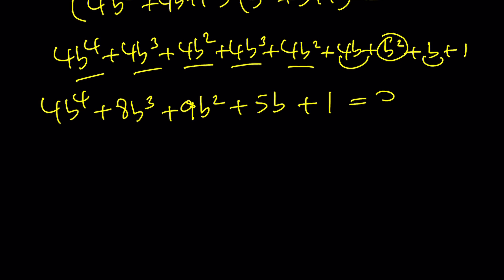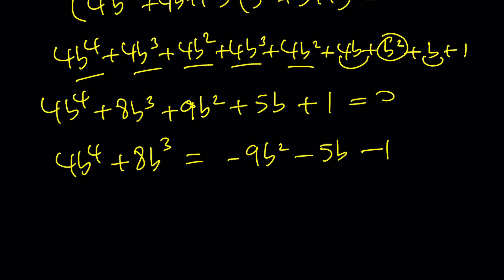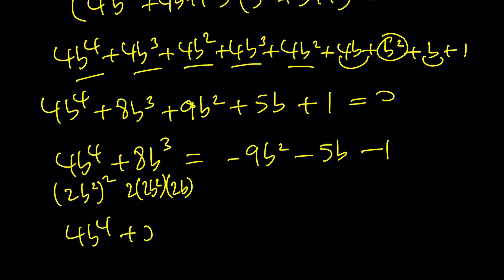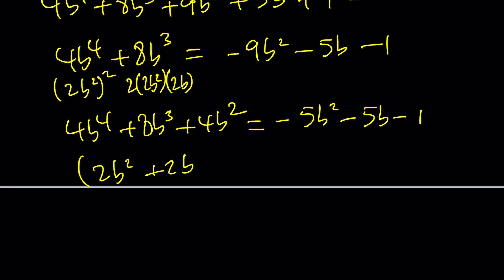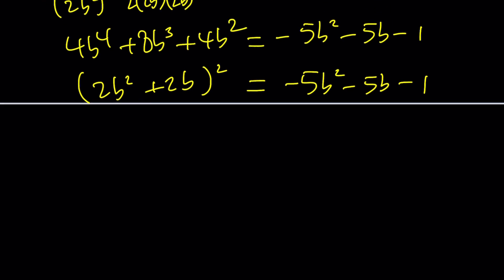One thing we can do is turn this into a perfect square. Leave the b to the fourth and b cubed terms on the left, throw everything else on the right, then add something to both sides to complete the square. Note that b to the fourth is (2b squared) squared. We need to add 4b squared to both sides, making the left side (2b squared plus 2b) squared, but the right side — negative 5b squared minus 5b plus 1 — unfortunately is not a perfect square, so we need to go further.